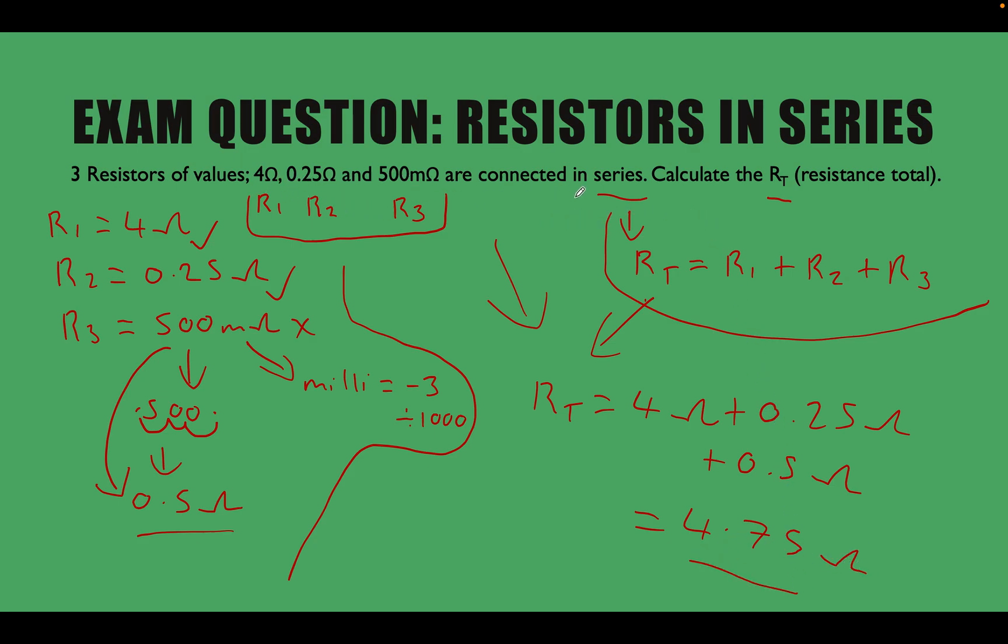We read the question. We realized that we're dealing with resistors in series, and we're being asked for the total resistance in series. So we wrote our formula out that we know. Resistance total is equal to R1 plus R2 plus R3.